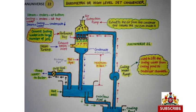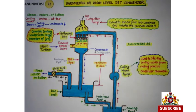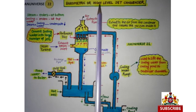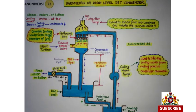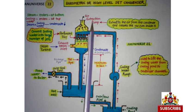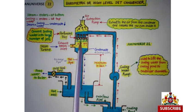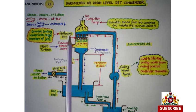Namaskar, YouTube Channel N Universe 222 में आपका स्वागत है। आज हम इस वीडियो में Barometric और High Level Jet Condenser के बारे में discuss करेंगे। इस Condenser के Main Components इस प्रकार हैं: Air Extraction Pump, Condenser Chamber और Condenser Cell।